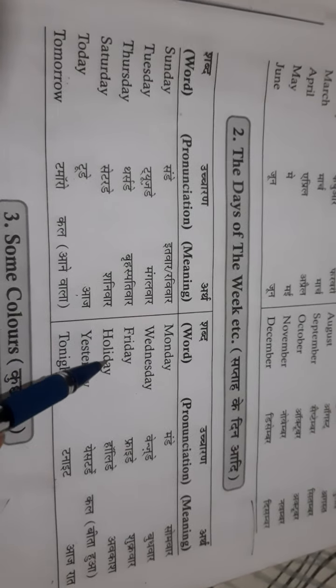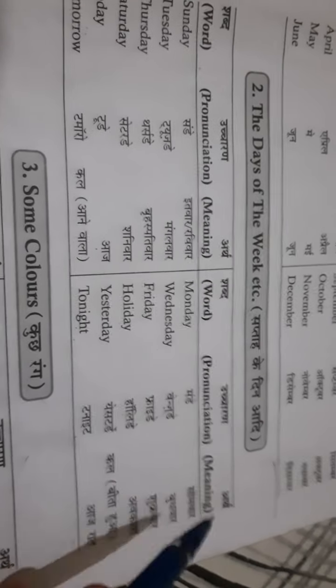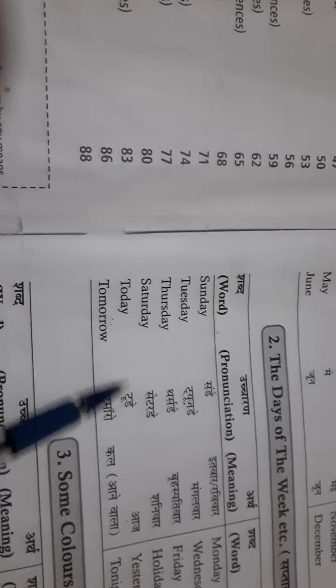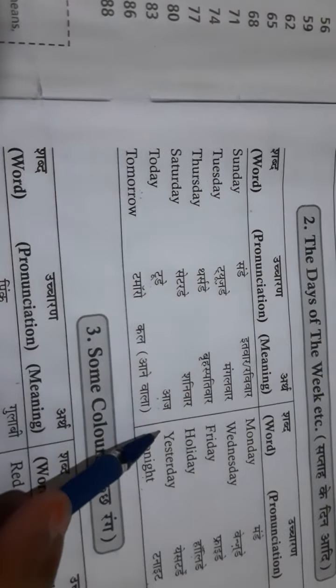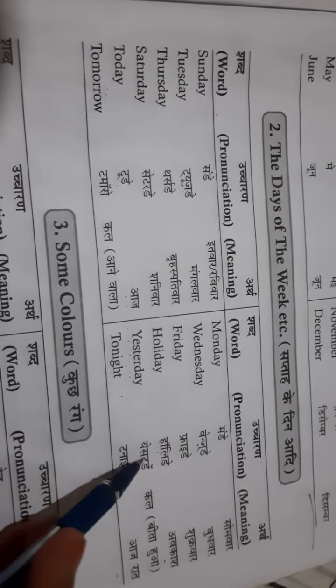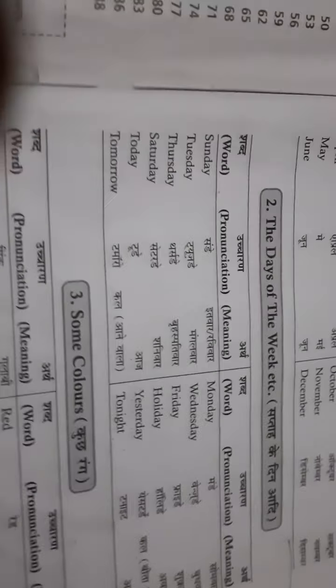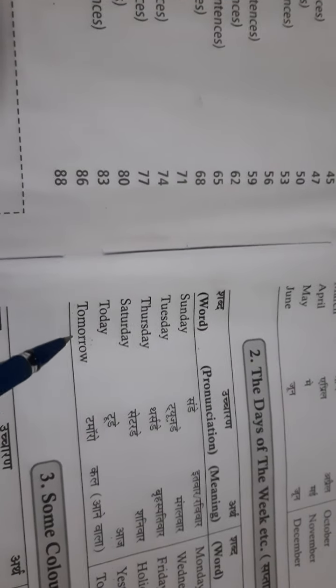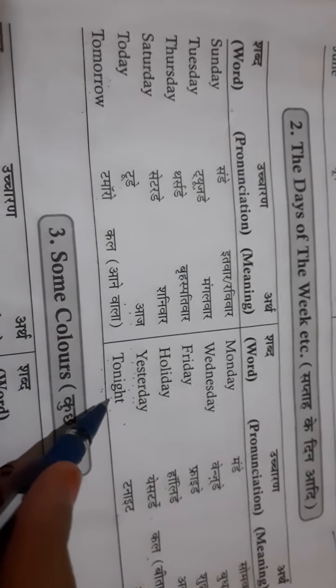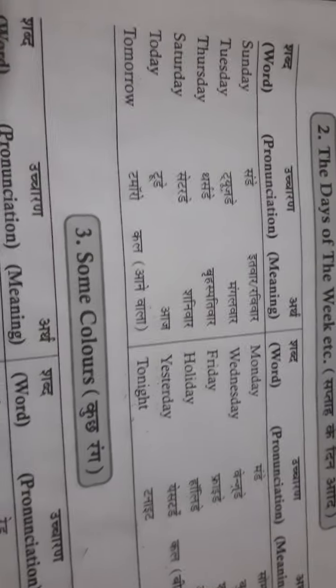Now some other days: H-O-L-I-D-A-Y, Holiday, means Awkaz/Chutti. T-O-D-A-Y, Today, means Aaj. Y-E-S-T-E-R-D-A-Y, Yesterday, means Kal/Beeta hua din. T-O-N-I-G-H-T, Tonight, means Aaj raat. That's all for today. Please memorize these with correct pronunciation. Goodbye.